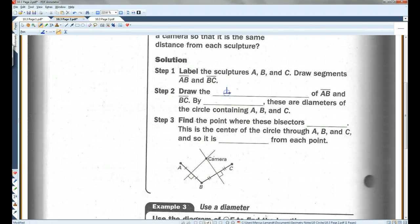Draw the perpendicular bisectors of AB and BC. So, if this is AB, I'm going to draw a perpendicular bisector of AB. So it makes a right angle, and it bisects it. I'll also draw a perpendicular bisector of BC. Right angle, and it's bisected. By theorem 10.4, these are diameters of the circle containing A, B, and C.